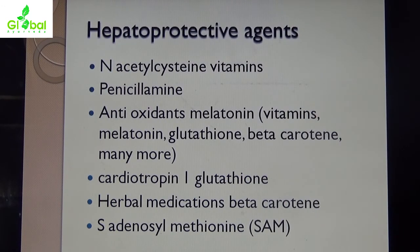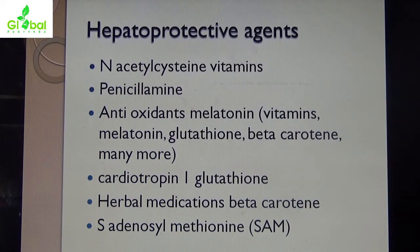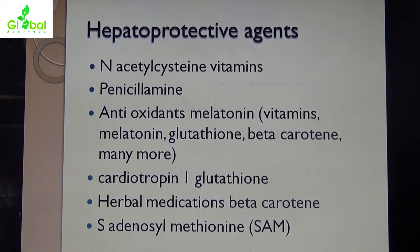Now, hepatoprotective agents. Many hepatoprotective agents are available, including N-acetylcysteine, penicillamine, antioxidant melatonin, vitamins, glutathione, beta-carotene, and many more. Carnitine, glutathione, herbal medications, beta-carotene, and S-adenosylmethionine — known as SAM — are all used as hepatoprotective agents or hepatoprotective drugs.